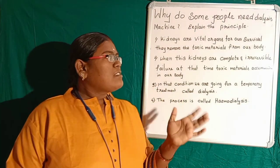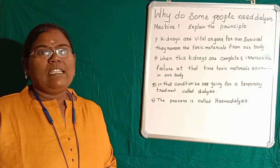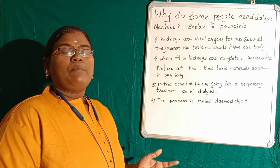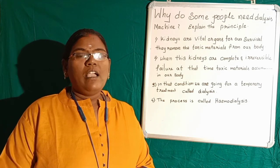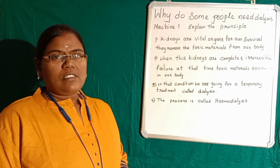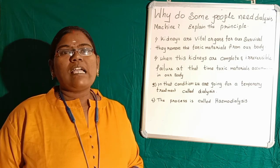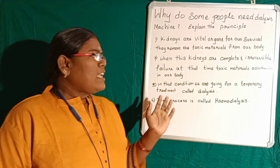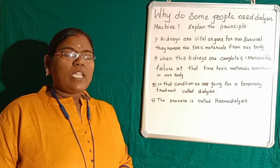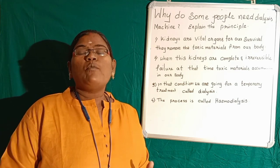When the kidneys are in complete and irreversible failure, we have to go for treatment. The temporary treatment is the dialysis process. This dialysis process is a separating technique by which we eliminate waste materials from our body. It is also called the artificial kidney. This is a temporary solution, not a permanent one. The main process involved in dialysis is hemodialysis.